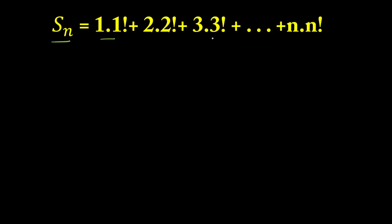The products of terms taken two at a time are given: 1·1! + 2·2! + 3·3! and so on up to n·n!. What we're going to do is convert the product of two numbers into a difference.